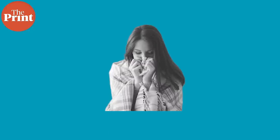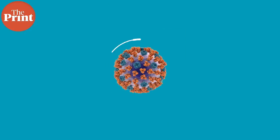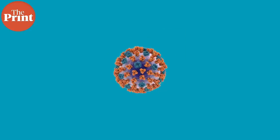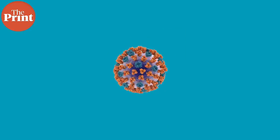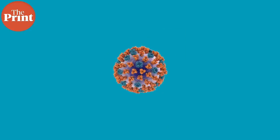The seasonal influenza virus, for example, mutates quite rapidly. There is an influenza vaccine, but the vaccine needs to be taken every year for it to be effective. This is because the virus mutates so fast that the vaccine rapidly gets outdated.